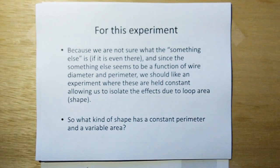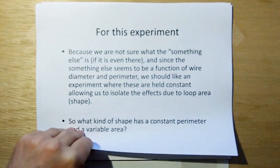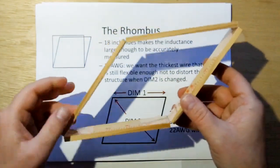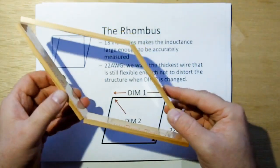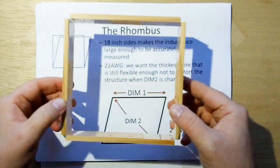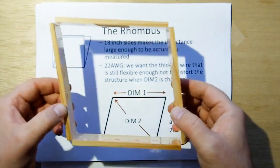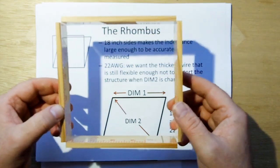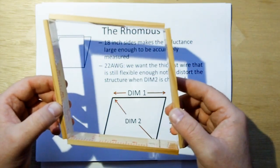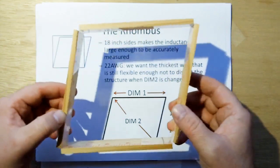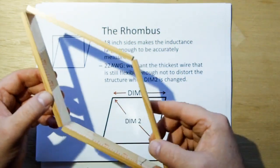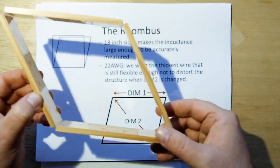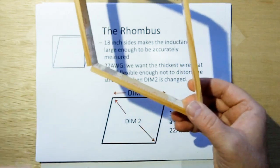So what kind of shape has a constant perimeter and a variable area? Well, that would be the rhombus. Now, the rhombus we're going to use is going to be 18 inches on the side. It's too big to show in the video. But you can see, as I vary the shape, the lengths of the sides are staying constant. If we put wire along the lengths of the sides of this rhombus, both the wire cross-section or diameter and the length of the wire will not be changing as we change the area of the shape. So this is the ideal shape to be discerning what the nature of induction is with regard to the shape of the loop.